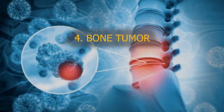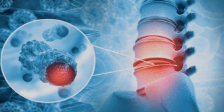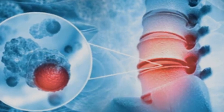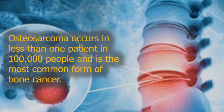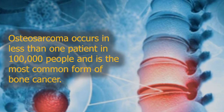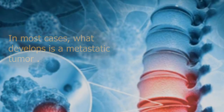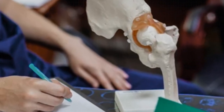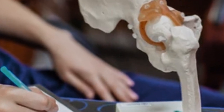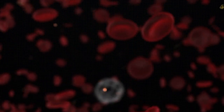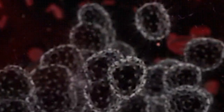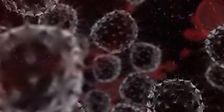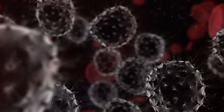4. Bone tumor. The bone tumor is not a very frequent condition and is not always classified among the most common bone diseases. Osteosarcoma occurs in less than one patient per 100,000 people and is the most common form of bone cancer. In most cases, what develops is a metastatic tumor, formed when cells from another tumor travel to the bones and settle there, creating a mass with uncontrolled growth. Typically the origin is breast cancer, prostate cancer, or multiple myeloma. Treatment includes management of the tumor of origin, as well as radiation therapy or chemotherapy.